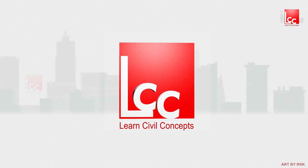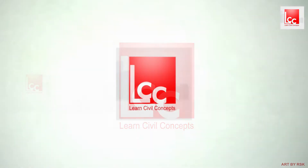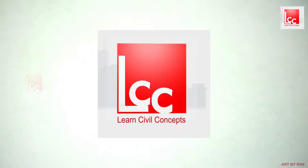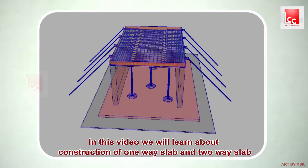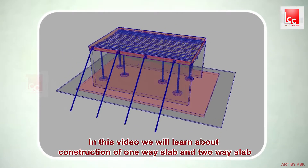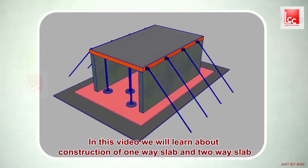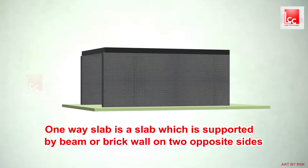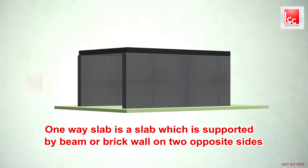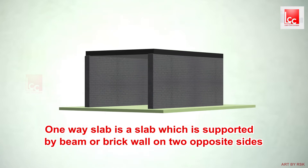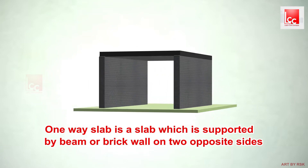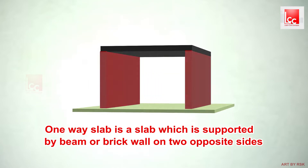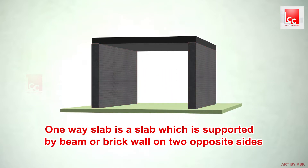Welcome to Learn Civil Concepts. In this video, we will learn about the construction of one-way slab. A one-way slab is a slab which is supported by beam or brick wall on two opposite sides to carry the load along one direction.